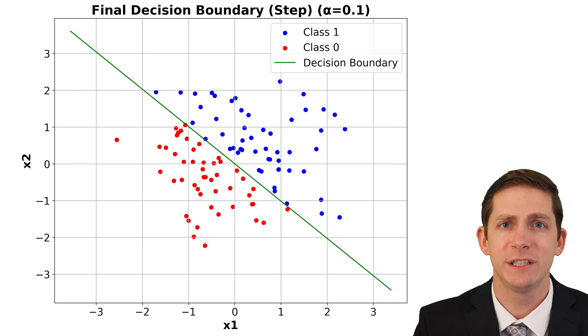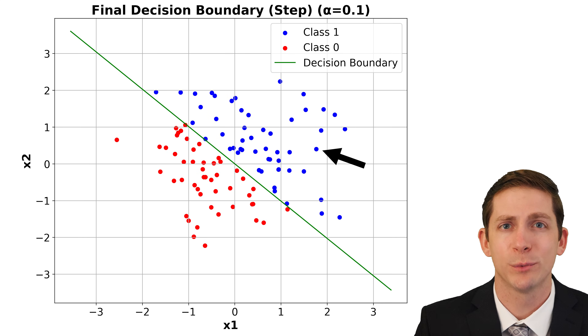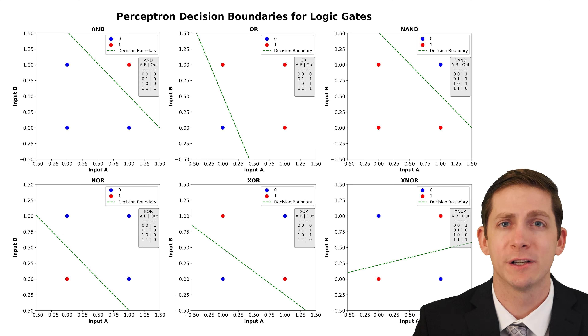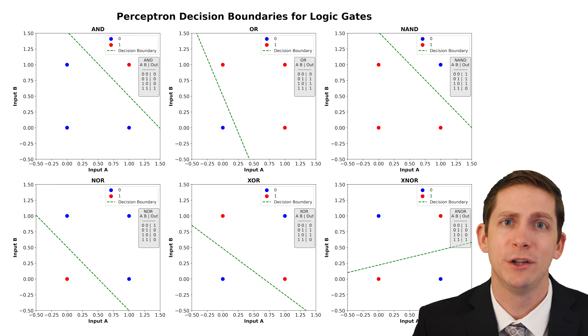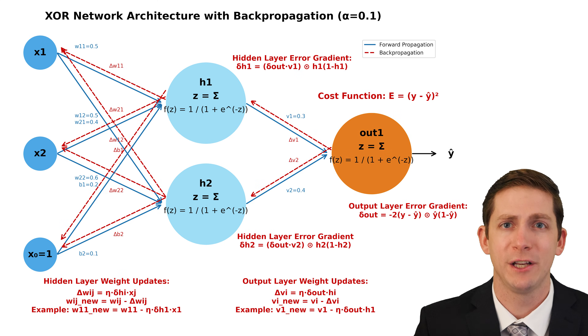These cases are linearly separable where a line can separate the class 0 and class 1 points. The XOR and XNOR logic gates are not linearly separable, so we will need to use a multi-layered network that is trained using backpropagation.